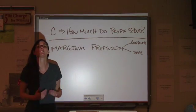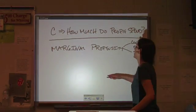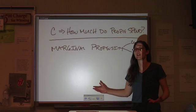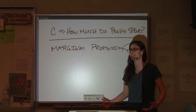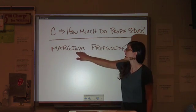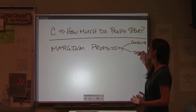Propensity is your likelihood to do something. My cameraman, for example, has a propensity to comment. No, I don't. Okay, so we're talking about your per unit likelihood with the next dollar that you will spend it or save it.